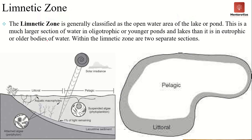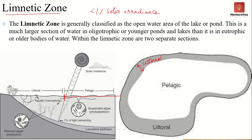The pelagic zone, also known as the limnetic zone, is the offshore area which begins from the outer margin of the littoral zone, where the solar irradiance received along the bottom of the water body is less than 1% of the solar irradiance received along the surface. In the image, the littoral zone is along the boundary of the water body, whereas the pelagic zone is surrounded by the littoral zone.